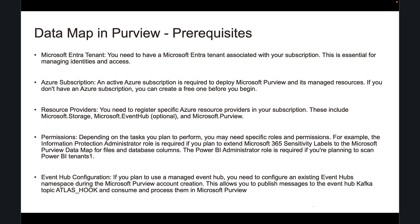You also need to register specific Azure resource providers in your subscription. These include Microsoft.Storage, Microsoft.EventHub (which is optional), and Microsoft.Purview. You need the appropriate permissions — depending on the tasks you plan to perform, you may need specific roles. For example, the information protection administrator role is required if you plan to extend Microsoft 365 sensitivity labels to the Microsoft Purview data map. The Power BI administrative role is also required if you're planning to scan Power BI tenants. And if you plan to use a managed Event Hub, you need to configure an existing Event Hub namespace during the Microsoft Purview account creation.